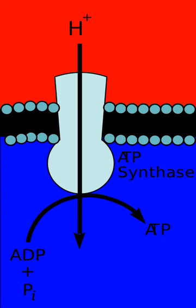In eukaryotes, NADH is the most important electron donor. The associated electron transport chain is NADH → Complex I → Q → Complex III → cytochrome C → Complex IV → O2, where Complexes I, III, and IV are proton pumps, while Q and cytochrome C are mobile electron carriers. The electron acceptor is molecular oxygen.